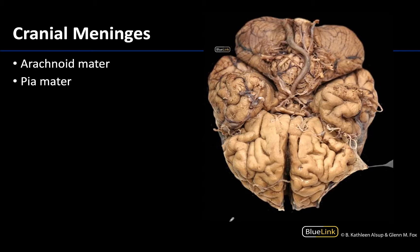Moving to the deeper meninges, the arachnoid is a little thicker and can actually be dissected away from the brain. The pia mater, however, is so closely adhered to the brain it cannot easily be dissected away. The pia is what gives the brain and spinal cord that shiny appearance, as the pia mater lies directly on the brain.